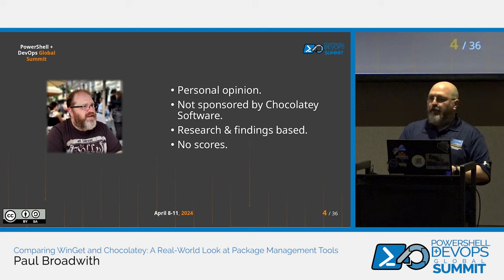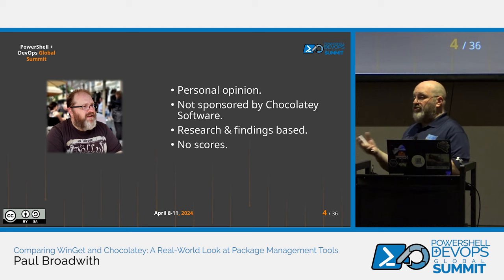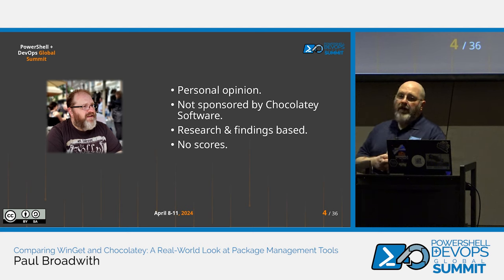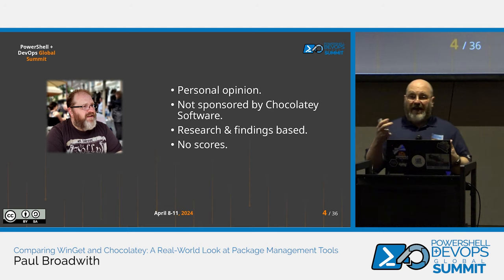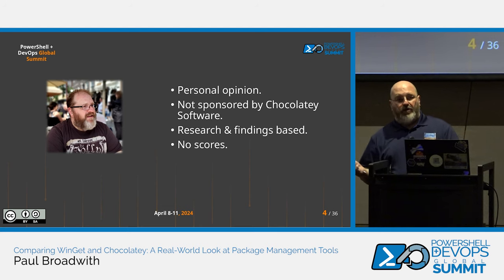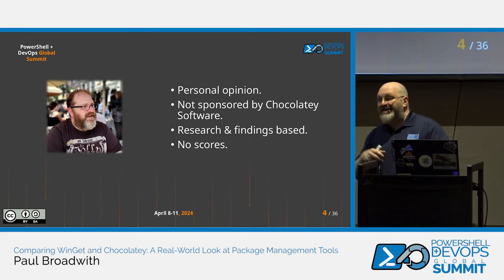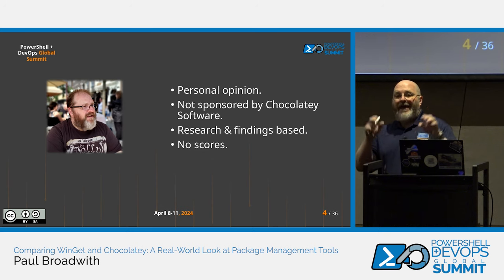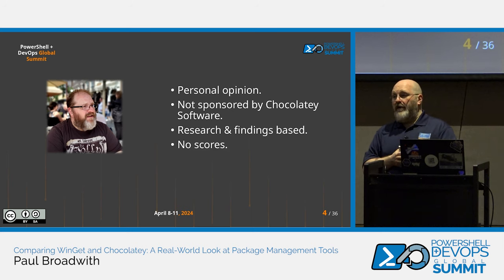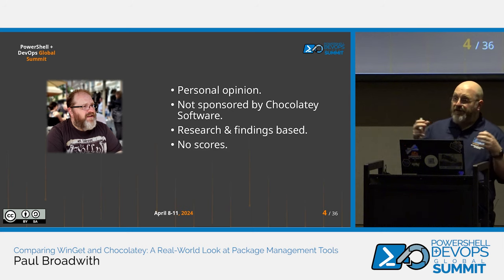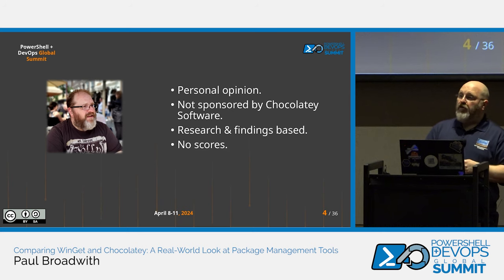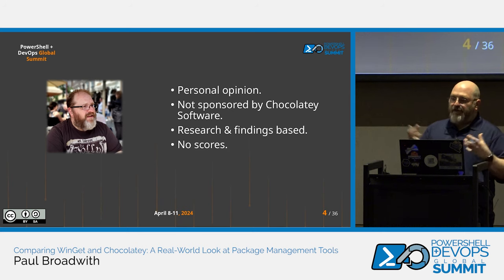This is research- and findings-based. I know Chocolatey CLI quite well being responsible for it, and for WinGet I've used it and looked into various aspects — documentation, forum posts, GitHub issues, and different types of sources. If any of it is incorrect, please let me know, because this isn't supposed to be a hit piece against WinGet. It's supposed to look at both tools and come up with some fact-based conclusion.